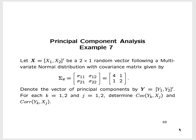Example 7: again we have a two-by-one random vector following a multivariate normal distribution with covariance matrix given by a two-by-two matrix where the variance of x1 is four, the variance of x2 is two, and the covariance between x1 and x2 is one. We again denote the vector of principal components as bold y = (y1, y2), and for each k and j from one to two, determine covariance and correlation between y_k and x_j.